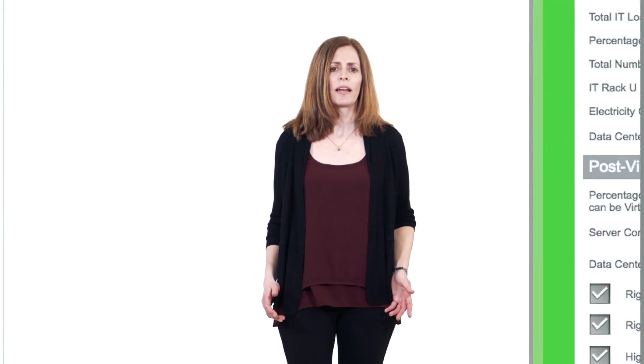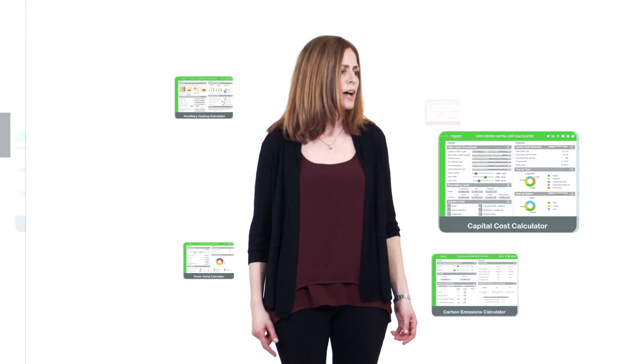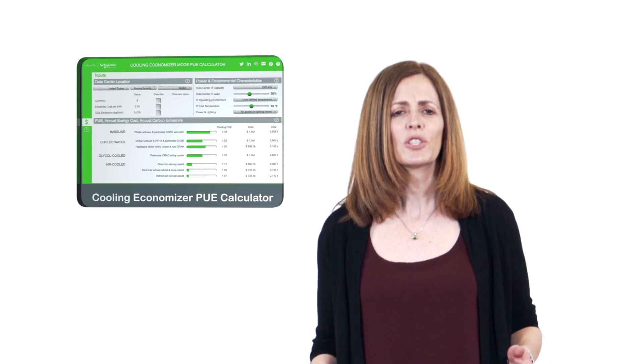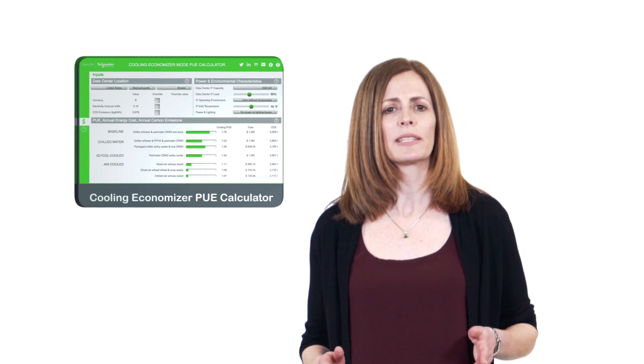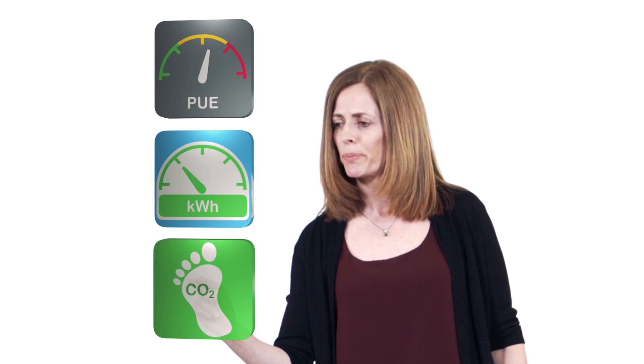Our goal within the Data Center Science Center is to help you make the best decisions for your environment. The cooling economizer PUE calculator is one of the many tools we've developed to help you justify trade-offs like this one. This tool allows you to set key parameters like location and IT operating conditions, and compares PUE, energy consumption, and carbon footprint of different cooling approaches.